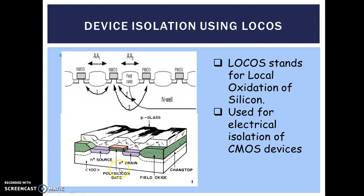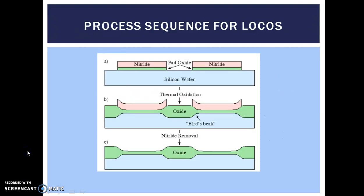Let us understand the process sequence. It is a microfabrication process where silicon dioxide is grown in selected areas. At first, a very thin silicon dioxide is grown on the silicon surface on the wafer. This is called the pad oxide, and pad oxide acts as a stress reliever.